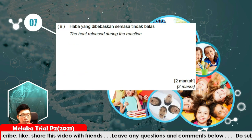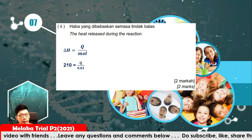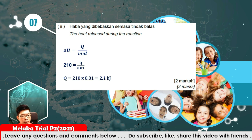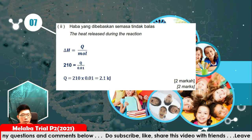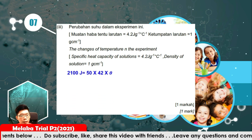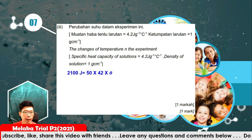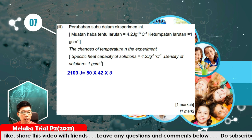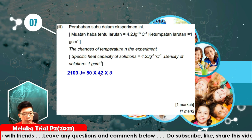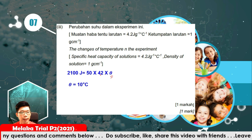Heat released during the reaction: using delta H equals Q over moles. Given delta H is 210 kJ/mol and moles is 0.01, Q is 2.1 kilojoules. Converting to joules: 2100 J equals M times C times theta. M is 50 and C is 4.2, so the change in temperature theta is 10 degrees Celsius.